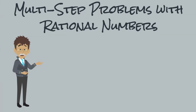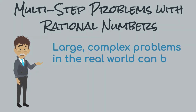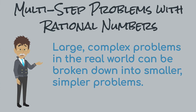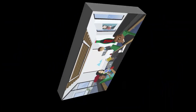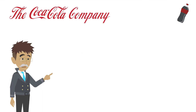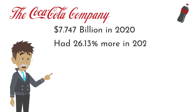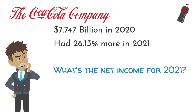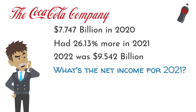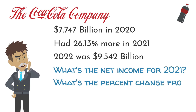You have already learned about and practiced working with rational numbers and the four basic math operations. Putting these concepts together leads to many types of real-world problems. Let's look at a few examples around Georgia. The Coca-Cola Company is headquartered in Atlanta, Georgia. The company reported a net income of 7.747 billion dollars in 2020. If the company had 26 and 13 hundredths percent more net income in 2021, what was the net income in 2021? In 2022, the Coca-Cola Company had an annual net income of 9.542 billion dollars. What was the percent change from 2021 to 2022?